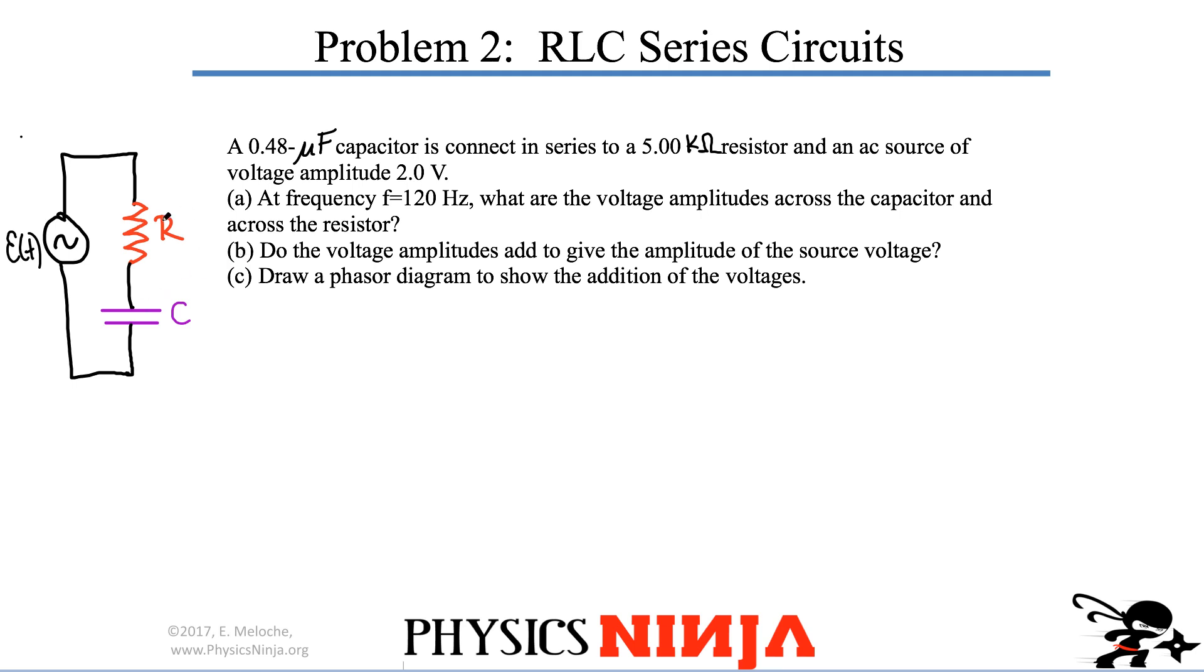In question B, do the voltage amplitudes that you're going to get across the resistor and capacitor add up to give you the voltage across the AC source? And question C, simply draw a phasor diagram that shows the addition of the voltages. This one's pretty straightforward.